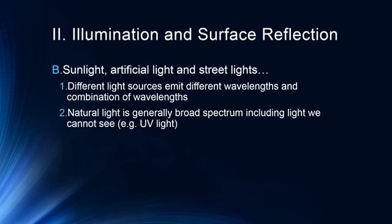Sunlight, artificial light, and streetlights all have different properties. Different light sources emit different wavelengths and different combinations of wavelengths. Natural light is broad-spectrum, including ultraviolet and infrared, and certainly all the hues we can perceive — it's the purest kind of light. You can now purchase light bulbs that try to mimic natural light, giving you an idea of what something might look like outdoors. Lighting is a particularly important part of understanding color.